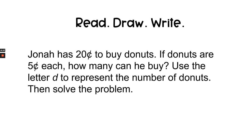Read the question together, pick out the most important information, and draw a math model to solve the question. Finally, write your answer in a complete sentence using information from the problem. Once you're satisfied with your answer, you can go to the description box below where I've provided the correct answer for you to check your work. Here is the practice problem: Jonah has 20 cents to buy doughnuts. If doughnuts are 5 cents each, how many can he buy? Use the letter D to represent the number of doughnuts, then solve the problem. Okay, it's your turn — do your very best work and I'll see you in the next lesson.